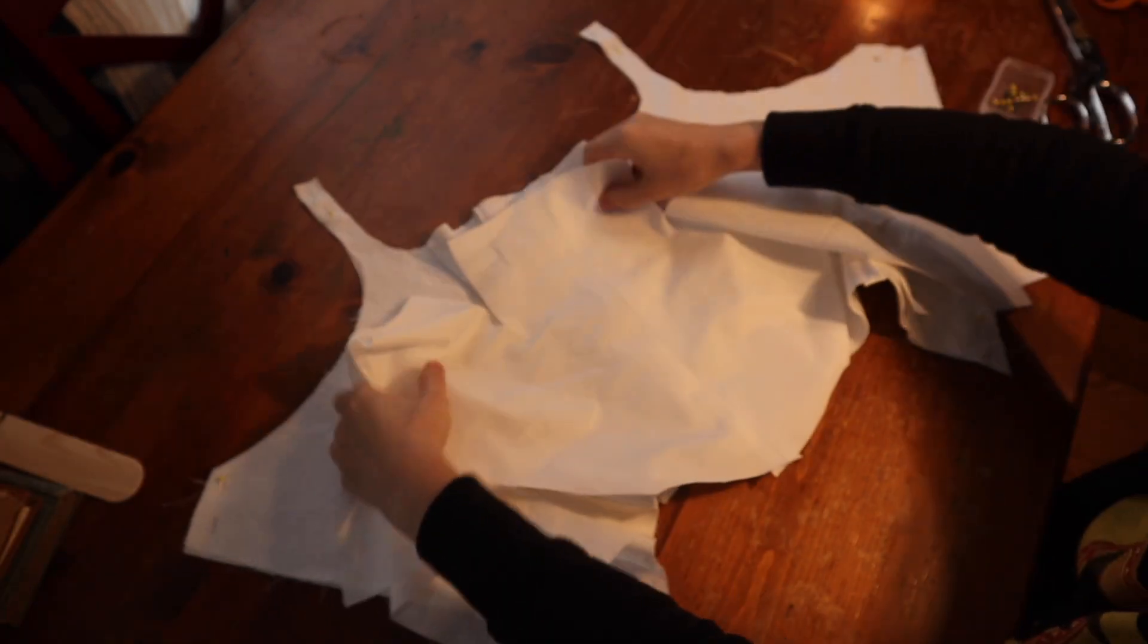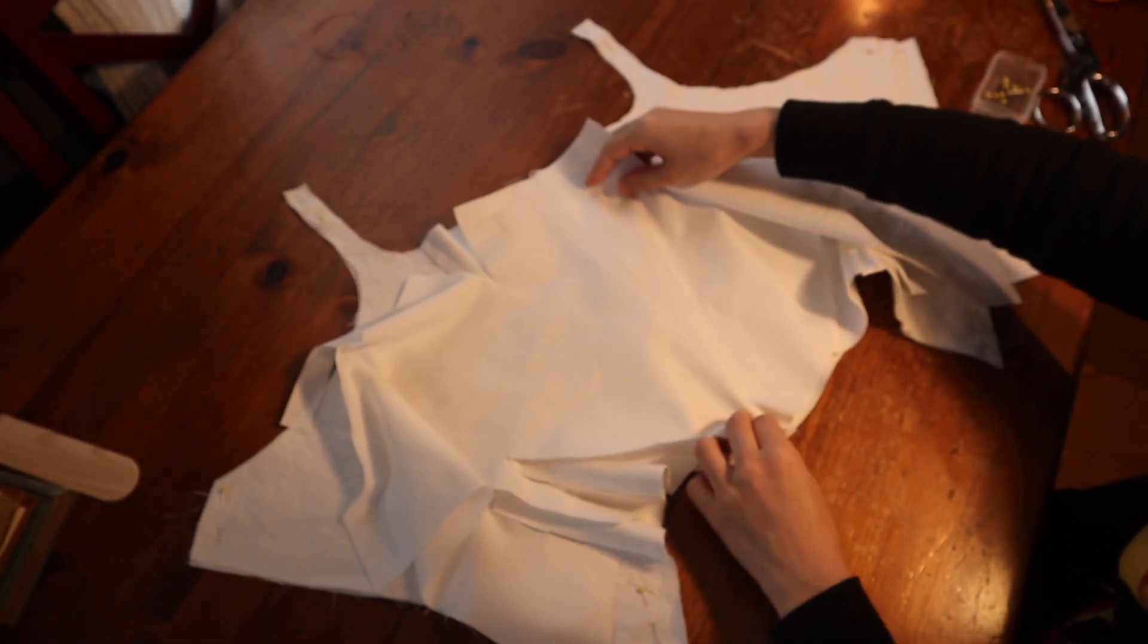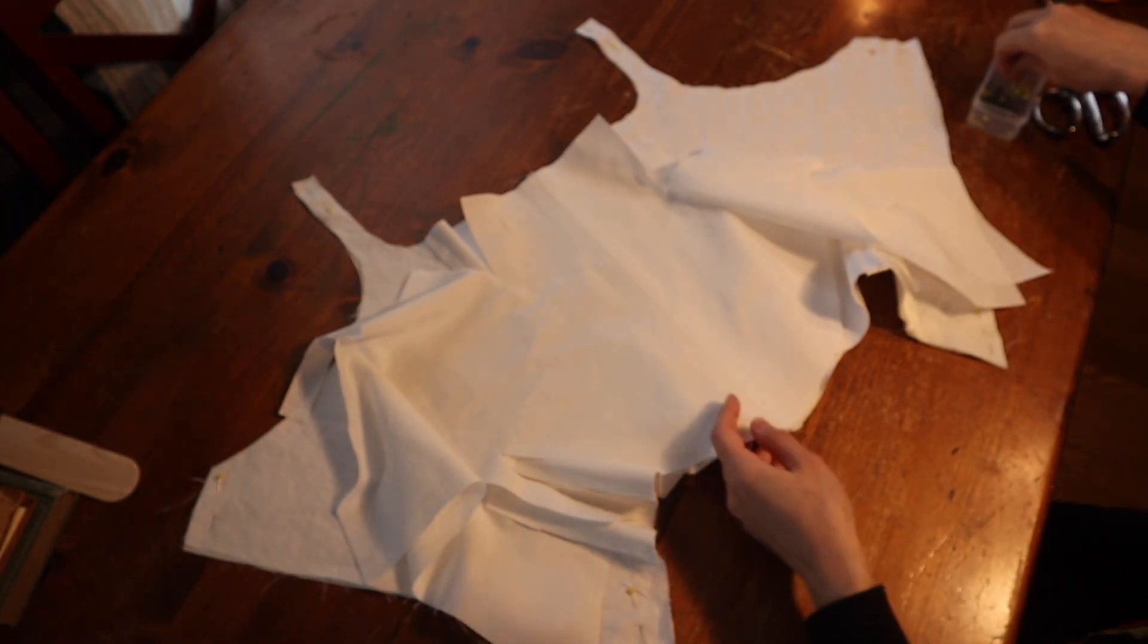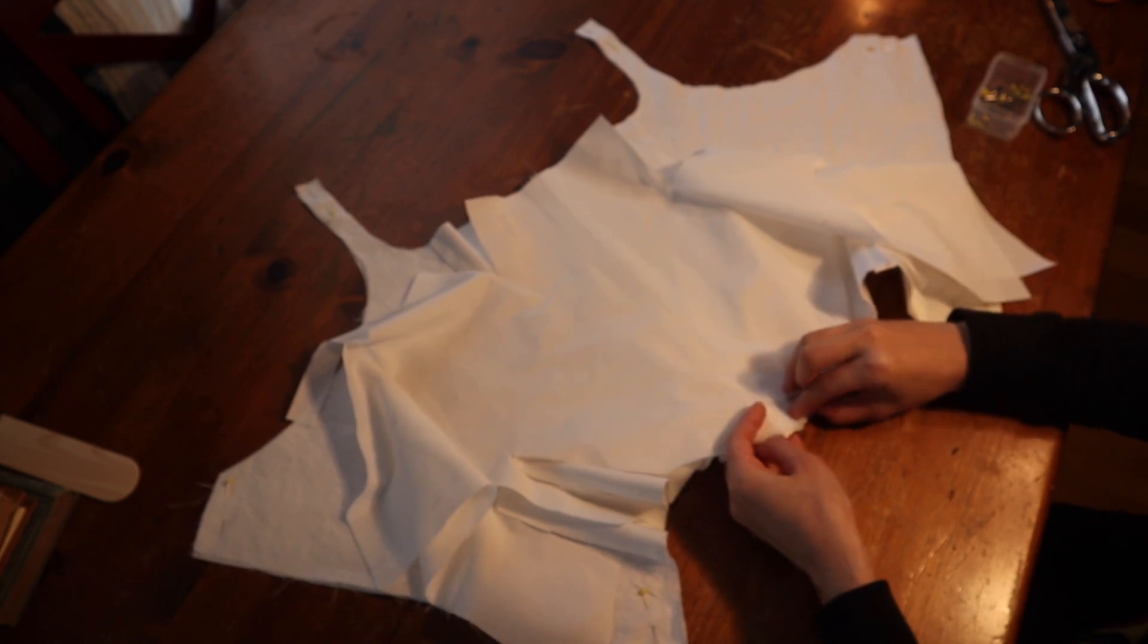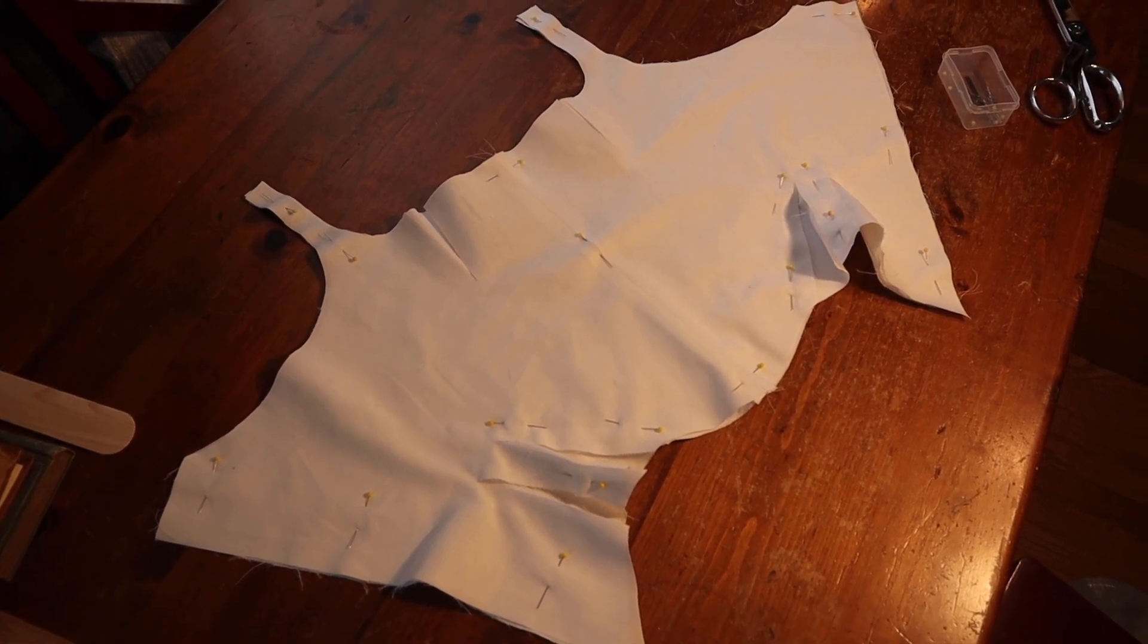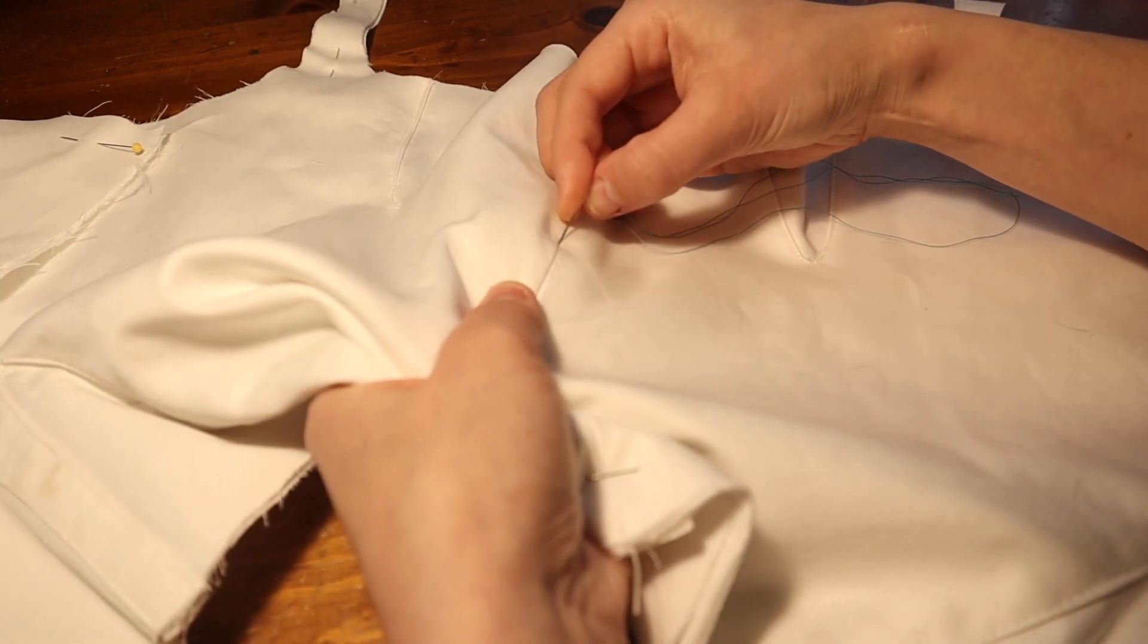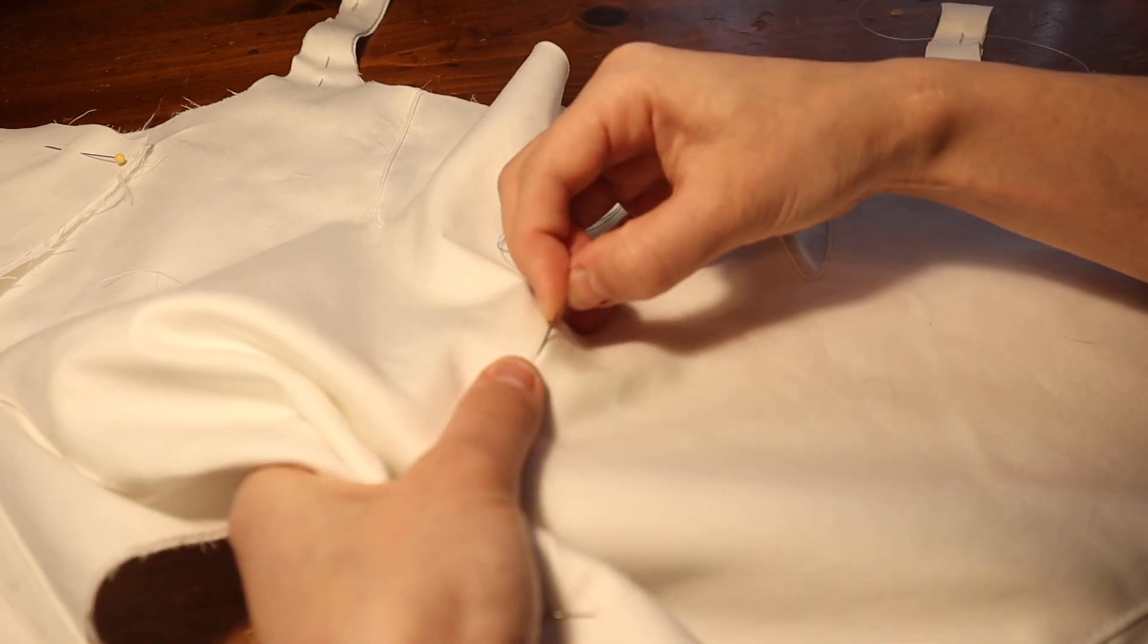Now I can attach the lining to the stays. I've stitched the linings at the center front, and now I'm matching them to the stays wrong sides together. And apologies for the camera being out of focus. This is what it looks like once the lining is pinned in place. To keep the lining and outer layer from shifting around while I'm working, I'm going to baste them together along that center front seam line.